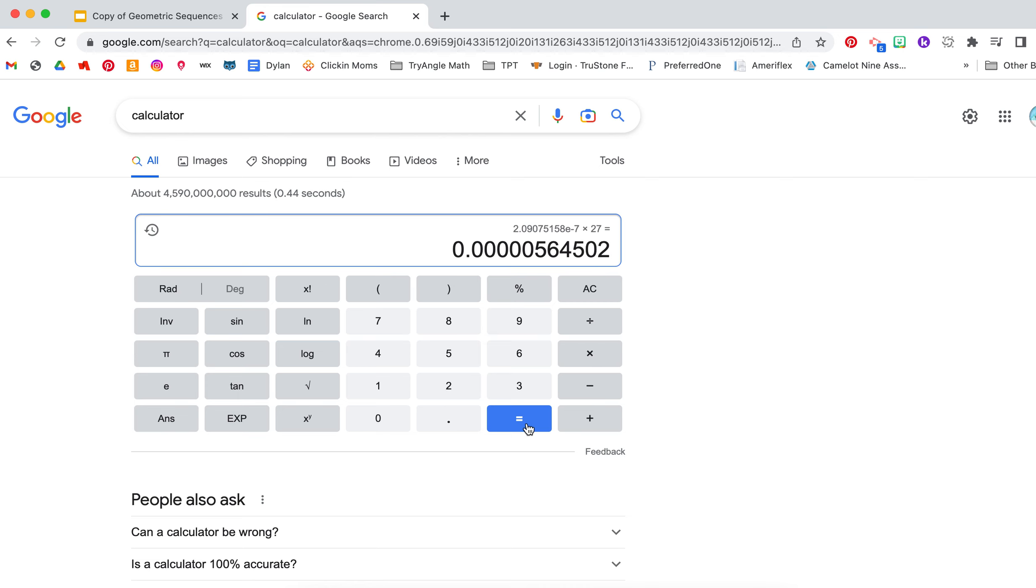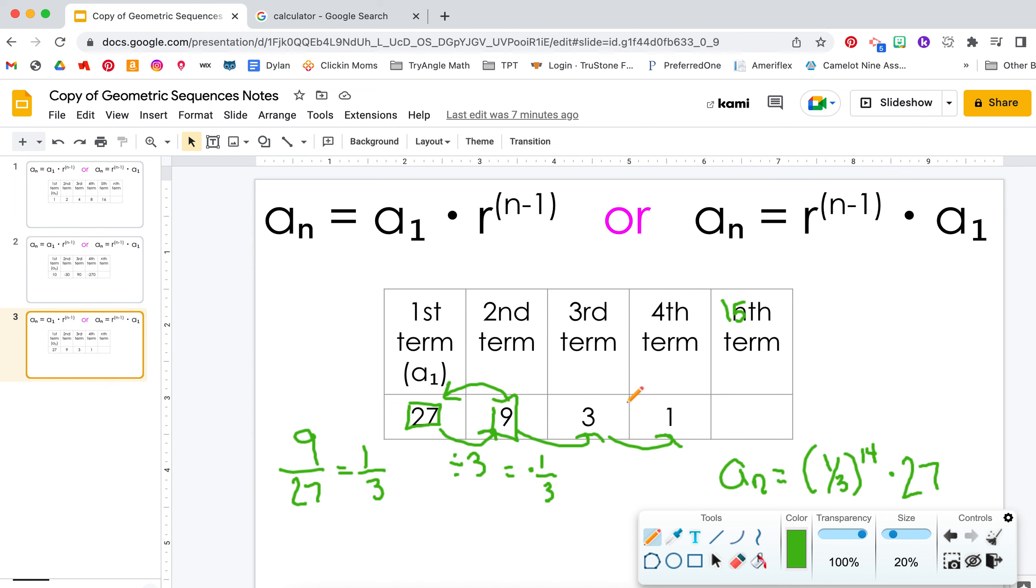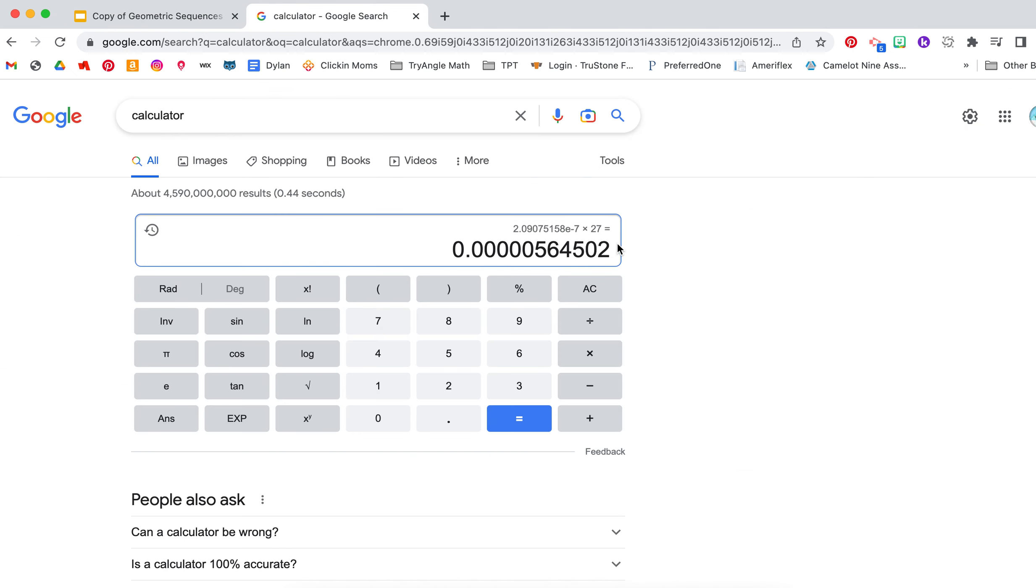Yikes, this one is a scary one. So this would be your itty-bitty number. So if we are looking at this pattern, the numbers are going to get smaller and smaller and smaller. So it would be this as your answer.